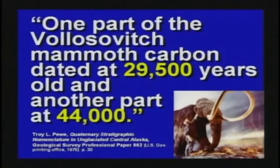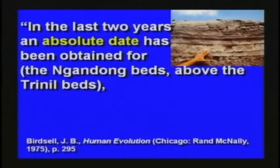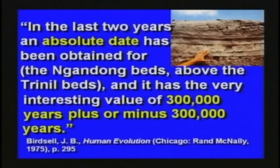The professor had been lying about this stuff for decades and finally resigned in disgrace. One part of a mammoth was dated 29,000 years old; another part was 44,000. From Rand McNally: an absolute date was obtained for the Gandong beds above the Trennel beds in Indonesia — it has the interesting value of 300,000 years, plus or minus 300,000 years. They nailed that one right on the head — a 300% error.